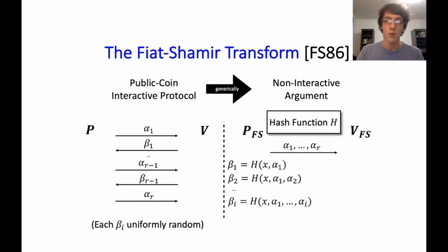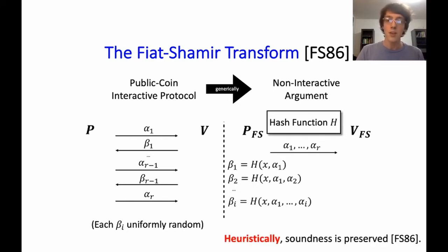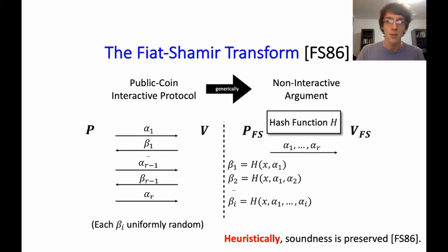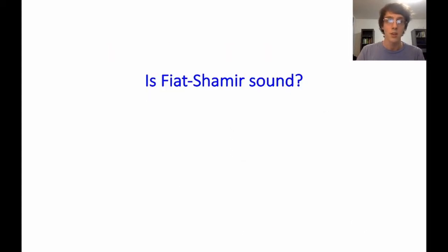The prover and verifier both have access to some publicly computable hash function h. The prover uses h to generate an entire transcript for the interactive protocol in one message, by iteratively computing a prover message alpha_i and then computing the response beta_i to be the hash of all messages so far. The verifier can compute all of these same hashes itself and check whether the overall transcript would be accepting.